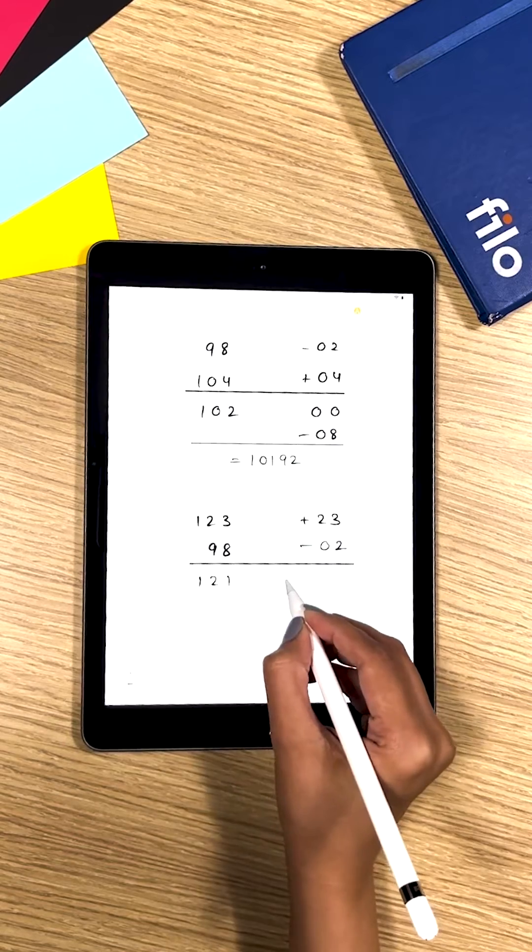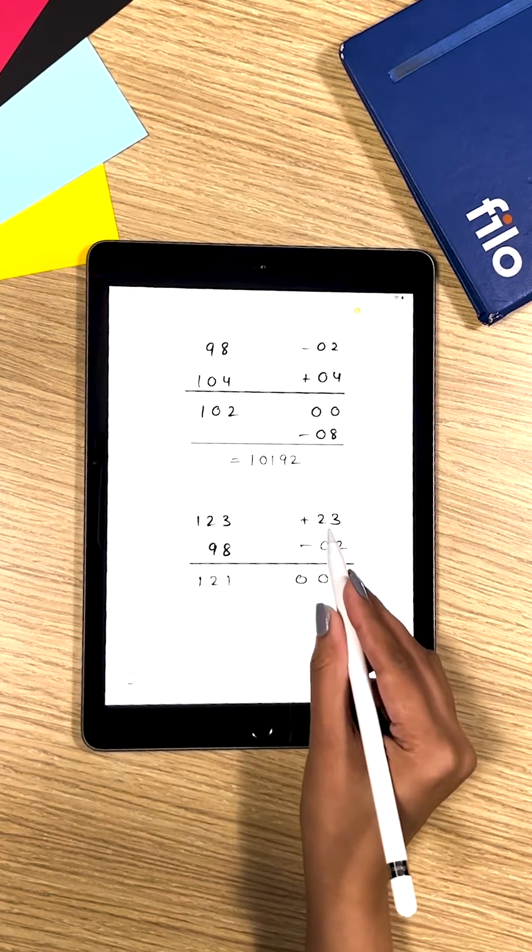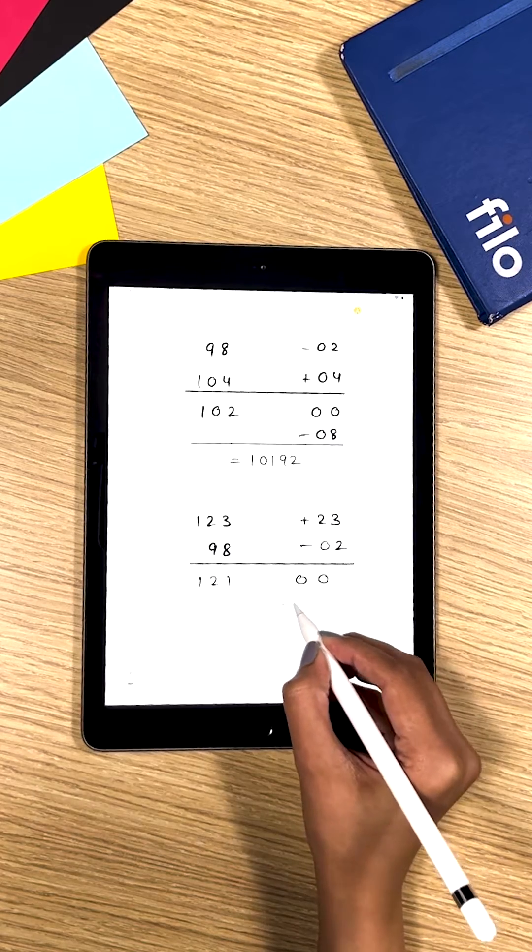Now you write 12100 and for the other part you just multiply 23 times minus 02 that gives you minus 46.